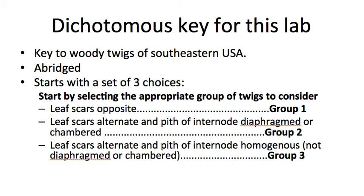We are going to do this exercise with a key to woody twigs of the southeastern United States, and all of the twigs I've sent you come from this region. I should warn you this is an abridged key — I removed about half of the species, maybe more, to make the exercise a little simpler. That means if you just go outside and find a twig, it might or might not key out correctly. If you want the full key, just send me an email and I can get it to you very easily.